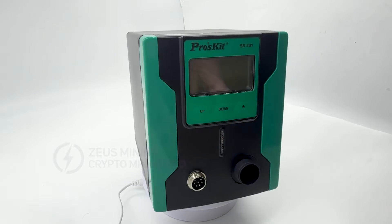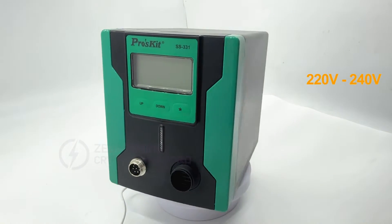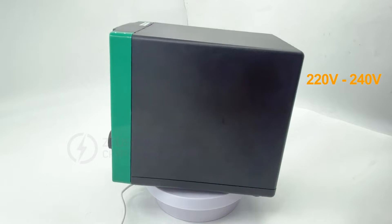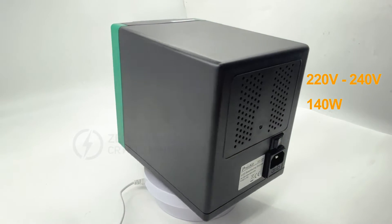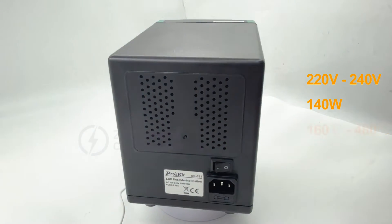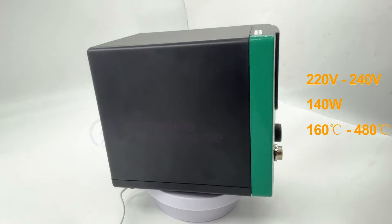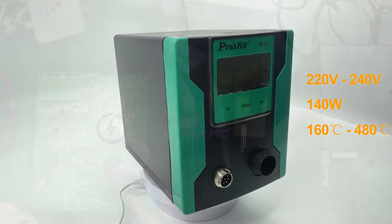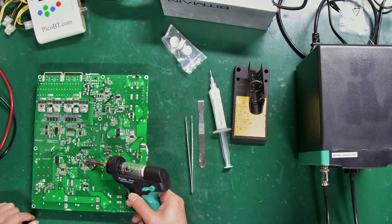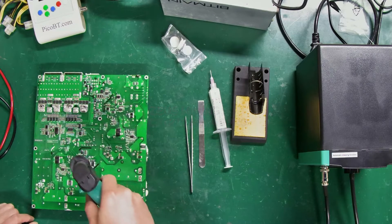It operates at an input voltage of 220 volts to 240 volts, and has a power of 140 watts. The temperature can be set between 160 degrees celsius to 480 degrees celsius, and it's widely used in repairing miners' power supplies and hash boards.